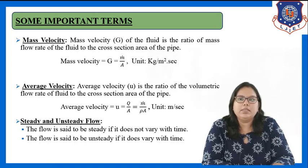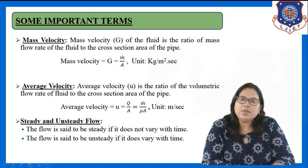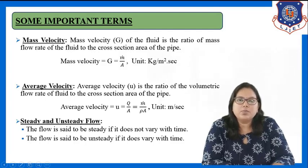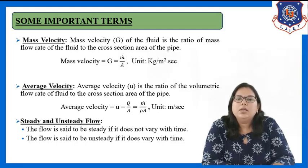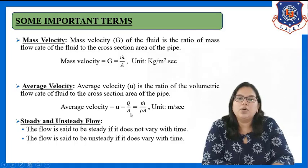The next term is average velocity. Average velocity, denoted by small u, is the ratio of volumetric flow rate of the fluid to the cross section area of the pipe. Volumetric flow rate is denoted by capital Q, and A is area. So, average velocity u is equal to Q upon A.